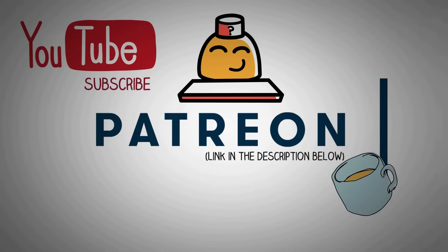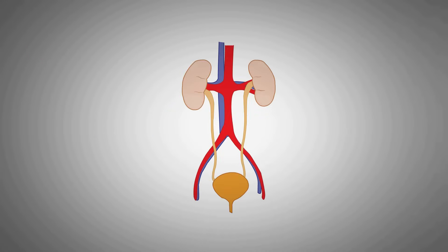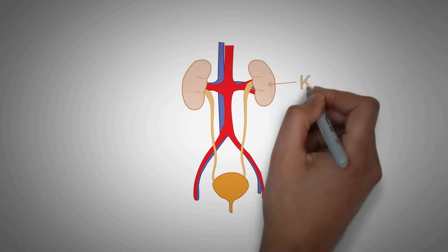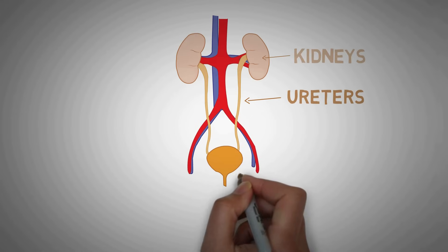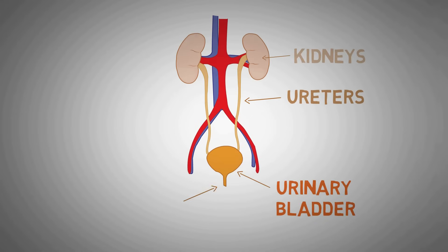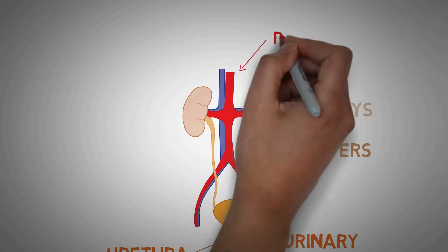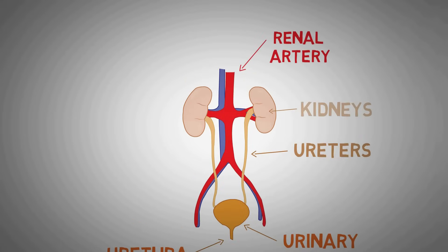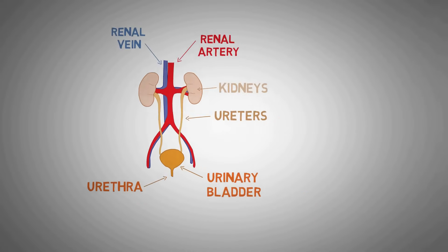The urinary system consists of a pair of kidneys, a pair of ureters, a urinary bladder and a urethra. The renal artery supplies the kidney with fresh blood while the renal vein drains the blood from the kidneys. We will go through each of these structures one by one and understand their role in the process of excretion.